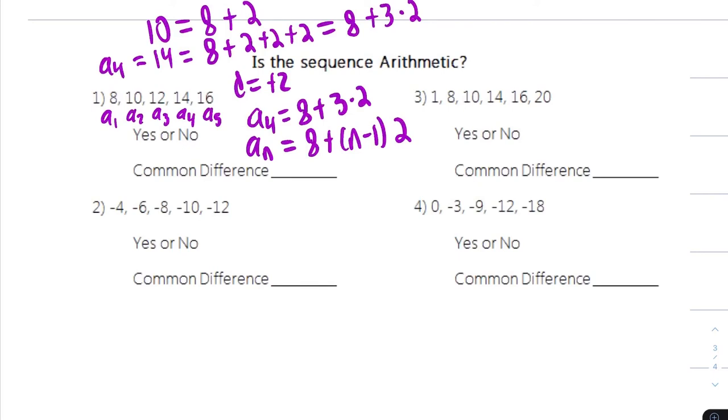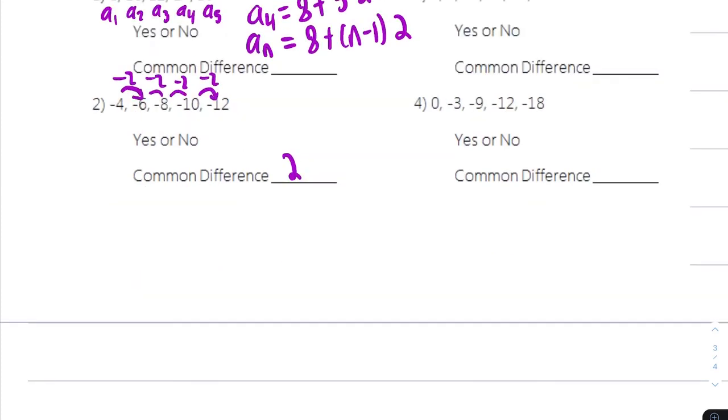Let's see if number 2 has a common difference. This one's a minus 2. Subtract 2. Subtract 2. Subtract 2. The common difference is minus 2. The formula is aN equals the first term, which is negative 4. That's the first one.